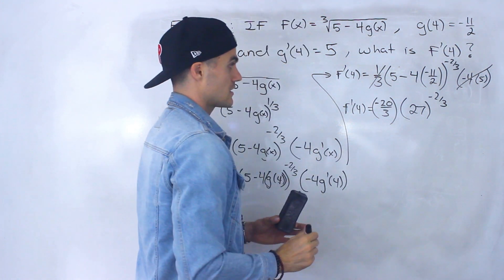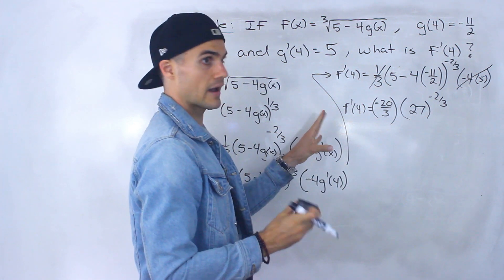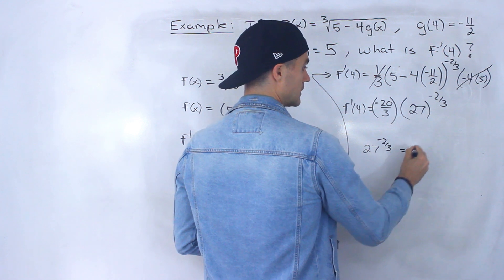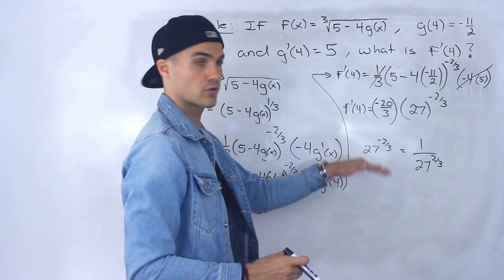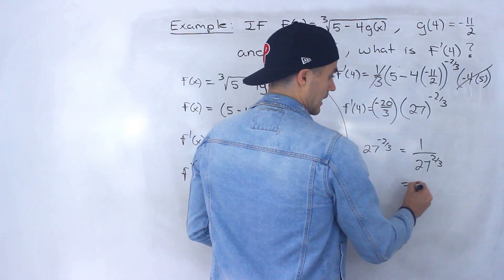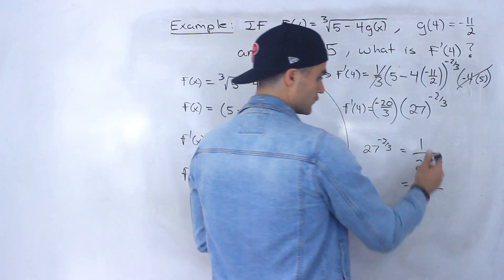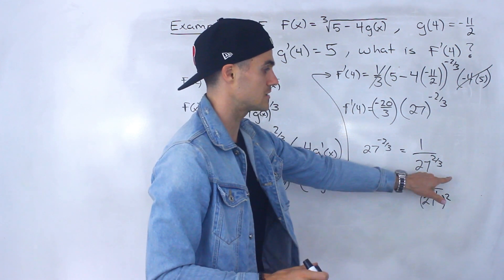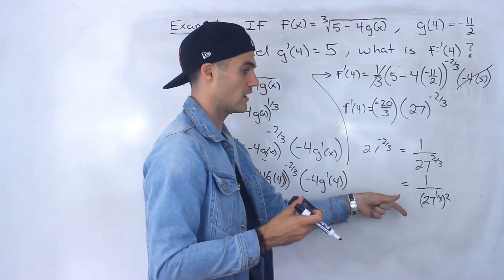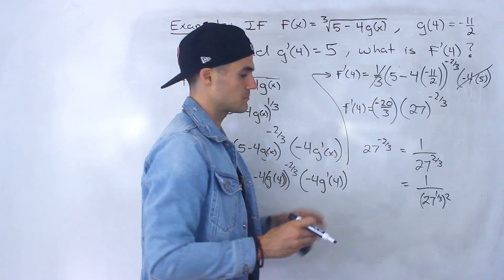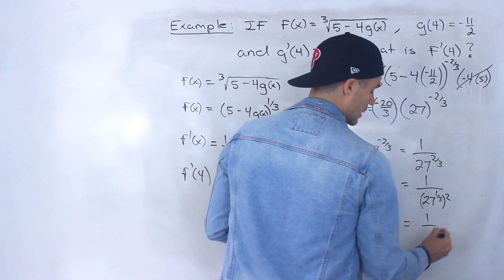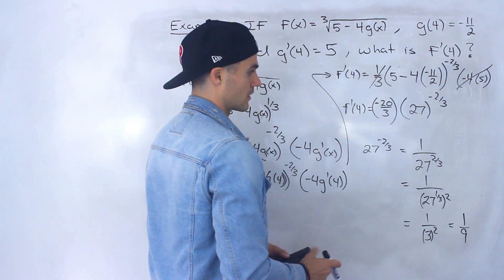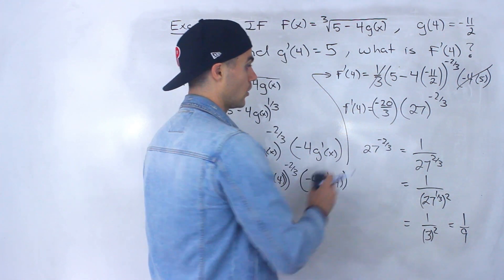Assuming we're doing a test without a calculator and we want the answer in simplified exact form — no decimals. So 27 to the negative 2 over 3 becomes 1 over 27 to the power of positive 2 over 3. We can split the fraction: 27 to the power of 1 over 3, which is the third root of 27, equals 3. Then that gets squared, giving us 1 over 9. So 27 to the power of negative 2 over 3 equals 1 over 9.